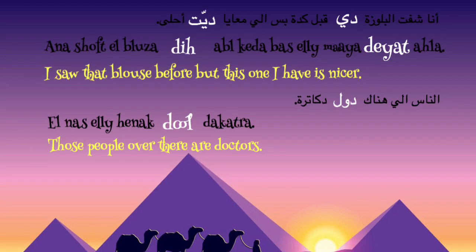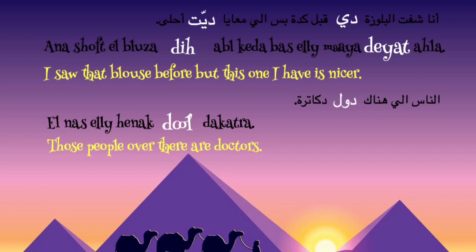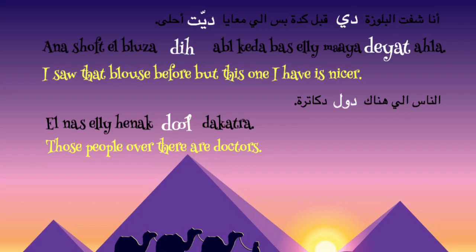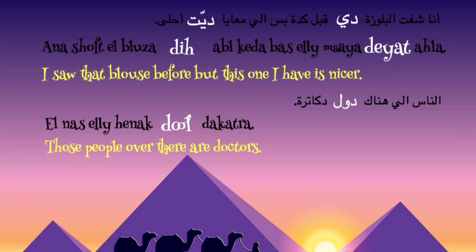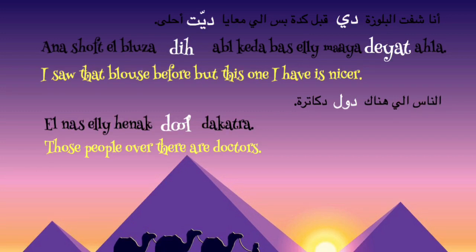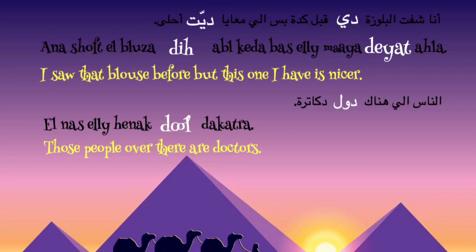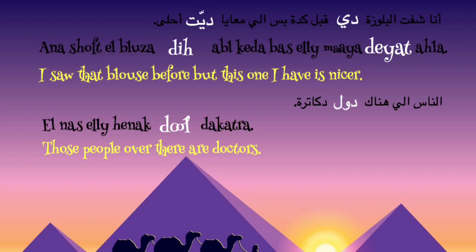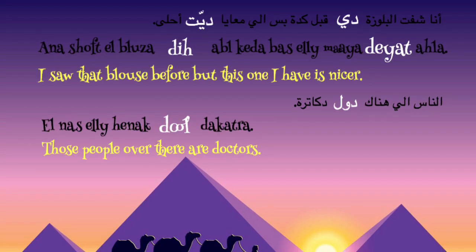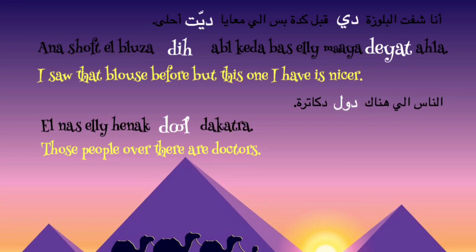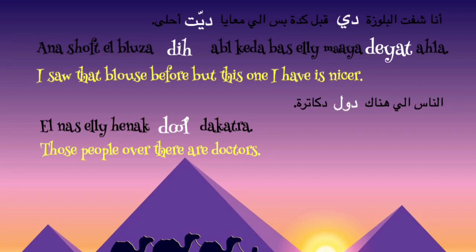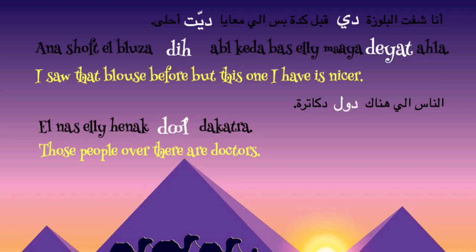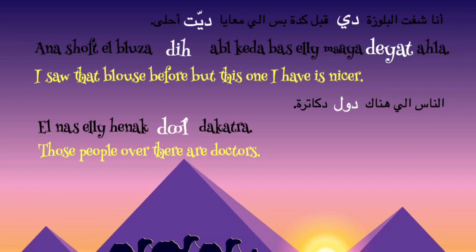Second and third sentence: 'Ana shoft el bloza di abl keda, bas elli ma3aya deyat ahla.' 'Ana shoft' — I saw. 'El bloza di' — that blouse — blouse is a female object. 'Abl keda' means before. 'Bas elli ma3aya' — but the one that I have. 'Deyat' — this one. '3agabni ahla' — it's nicer. So: I saw that blouse before, but the one I have — this one — is nicer.